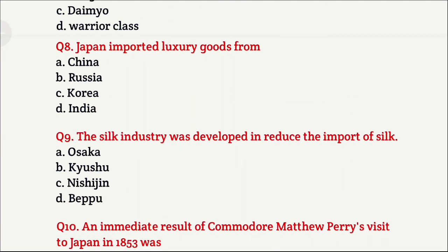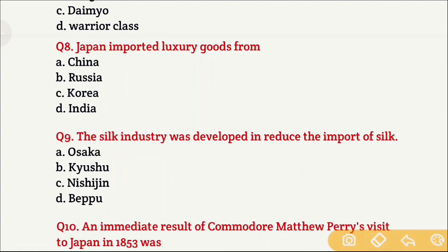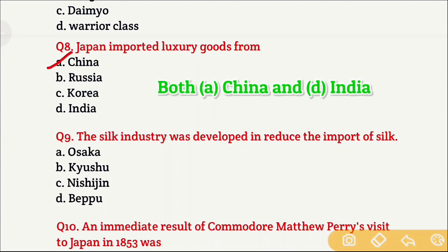Question 8: Japan imported luxury goods from — Option A is China, Option B is Russia, Option C is Korea, Option D is India. The options given are slightly incorrect, so the right answer is both A and D — Japan imported luxury goods from both China and India. Specifically, Japan imported silk from China and textiles from India.